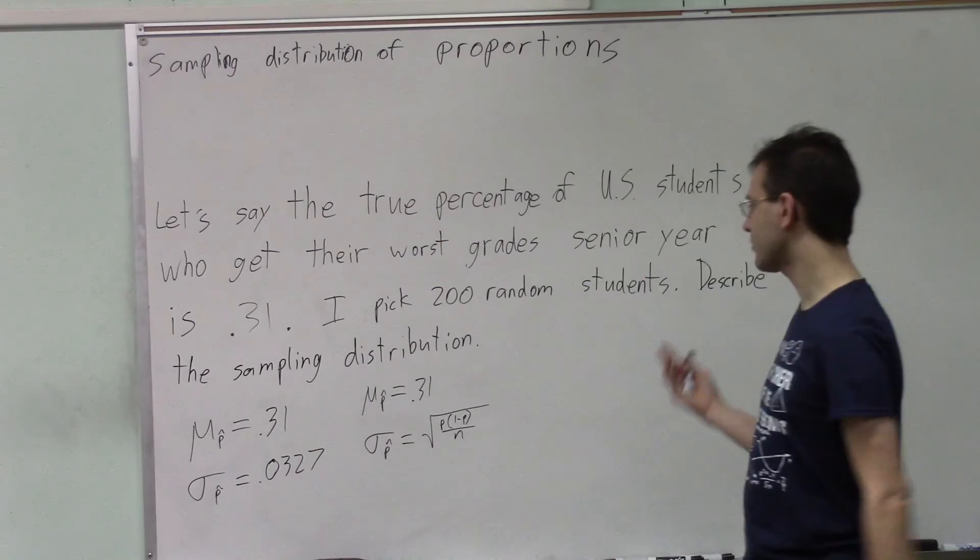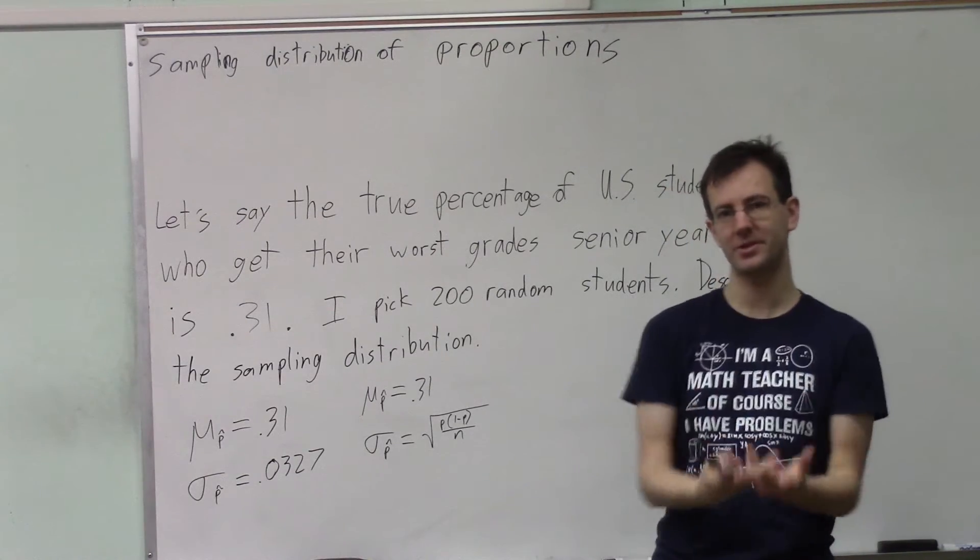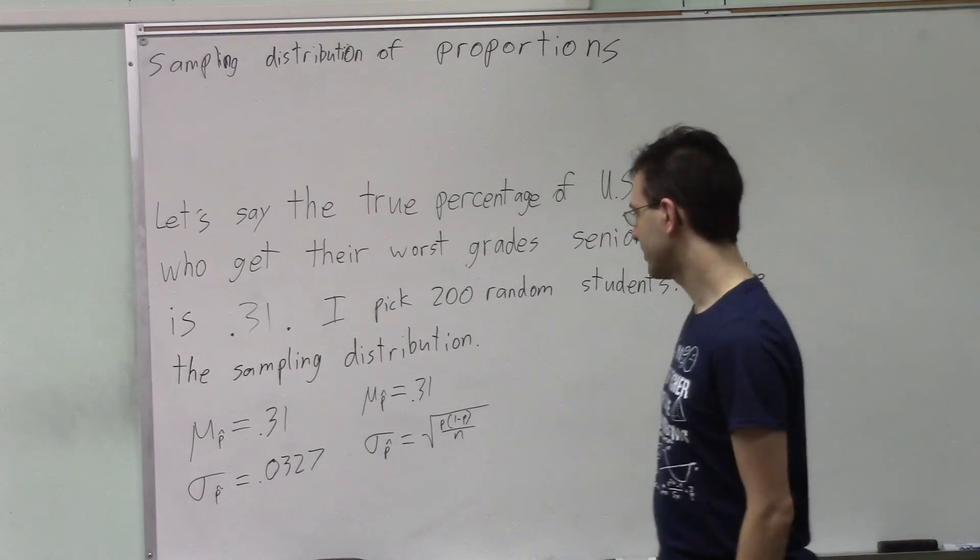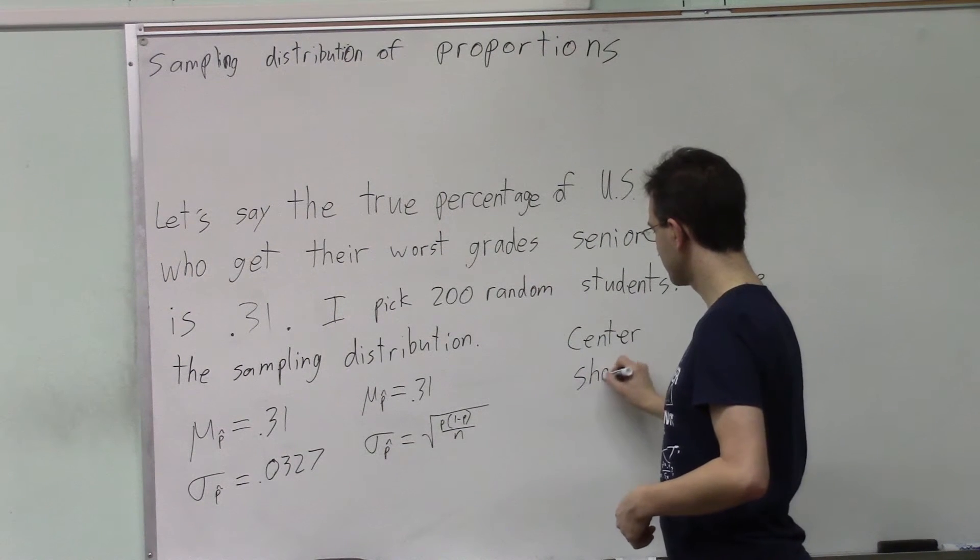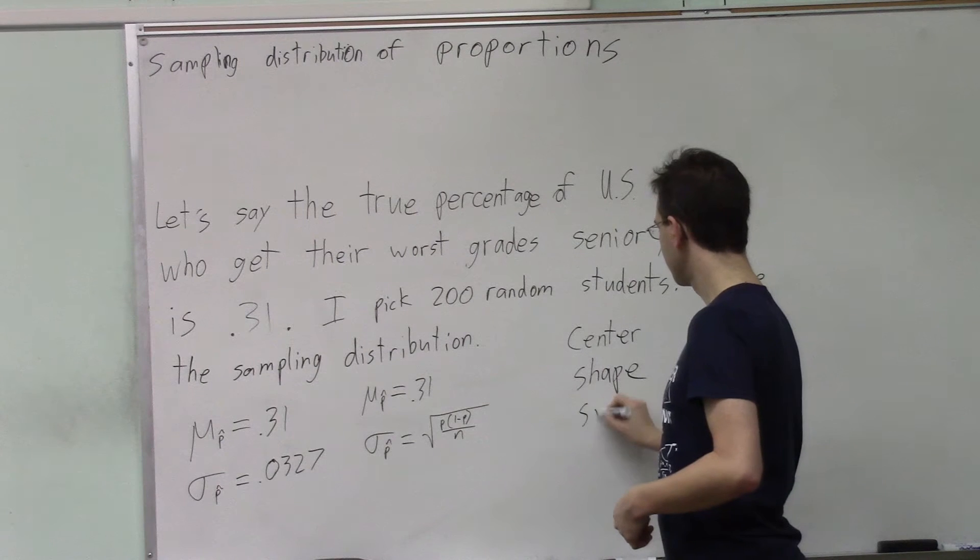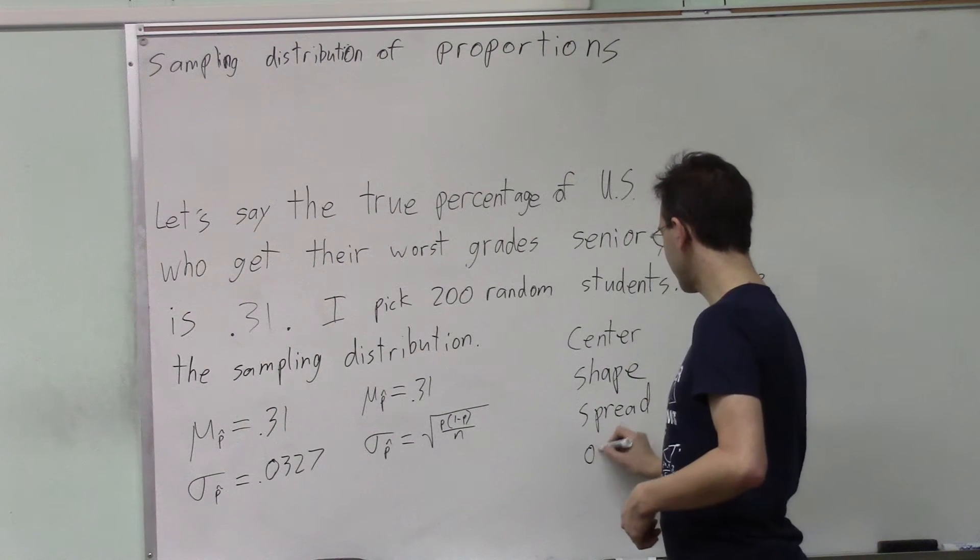Okay. So now describe, when you were describing distributions in chapter 1, you would describe center, shape, spread, outliers. Outliers was the last of those. So really the top three: center, shape, and spread.